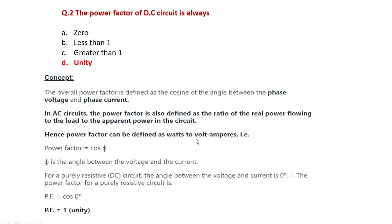The real power unit is watts and apparent power is volt-ampere, so power factor can also be defined as the watt to volt-ampere ratio — given as cos φ. For a purely resistive DC circuit, the angle between voltage and current is zero degrees, so the power factor is cos 0°, which equals unity (1). The correct option is D.